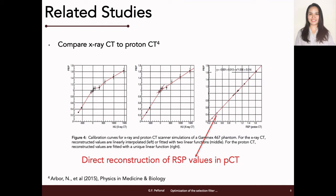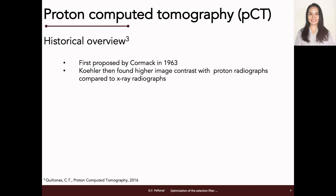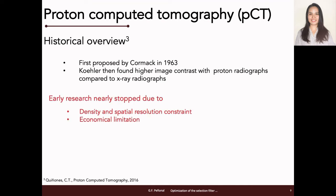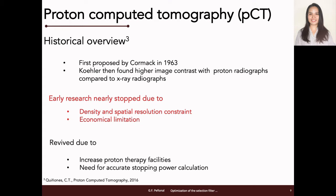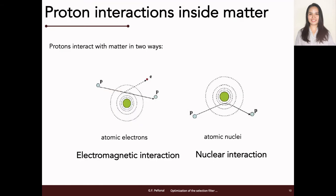To trace back the development of proton CT over time, let us look briefly at its historical overview. Proton CT was first proposed by Cormac in 1963, wherein initial experiments showed several advantages over photons. Coyler in 1968 showed the first example of using energetic protons in imaging and concluded that higher image contrast is obtained with protons compared to photons. However, early research nearly stopped due to density and spatial resolution constraints from multiple Coulomb scattering with protons, and economical limitations due to the high cost of building particle accelerators. Interest in proton CT was later revived due to increasing proton therapy facilities, thus requiring more accurate proton stopping power calculation.